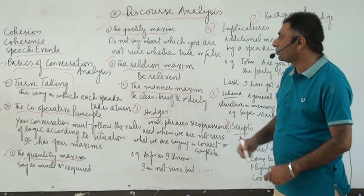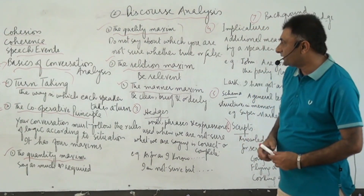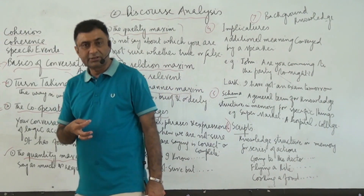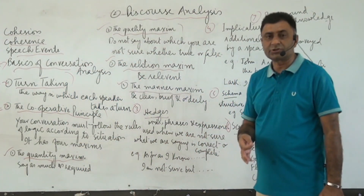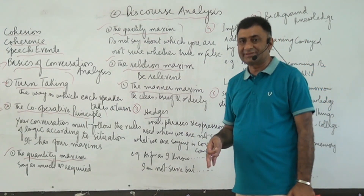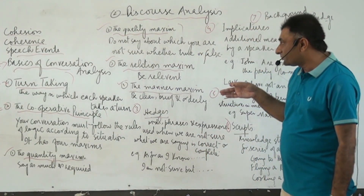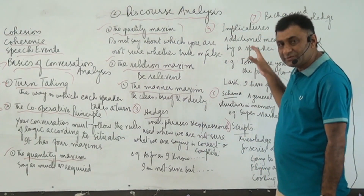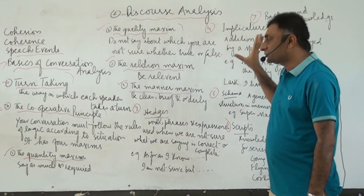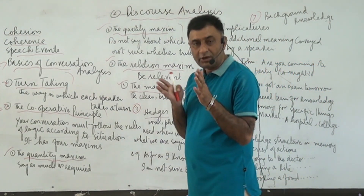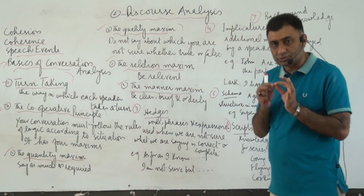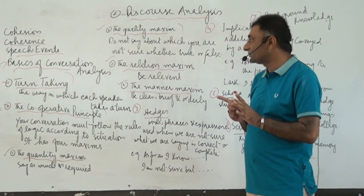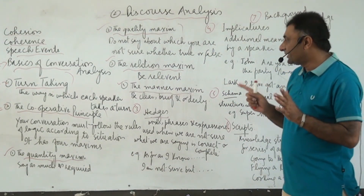The second is the quality maxim. Quality maxim means do not say anything about which you are not sure — whether it is true or false. Say what is necessary, what is required. Do not say too much beyond the demand of the situation. When you are not sure whether something is true or false, you must not say anything. This is called the quality maxim.